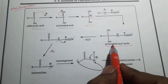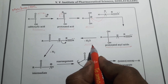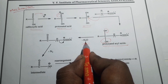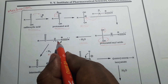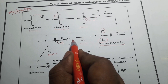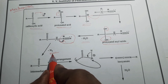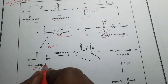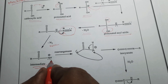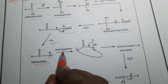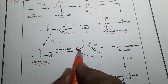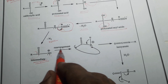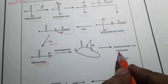Further, this protonated acyl azide loses water — the OH and hydrogen are removed — followed by loss of nitrogen. This leads to produce an intermediate with a positive charge on the nitrogen, which is the nitronium ion intermediate. This intermediate then undergoes rearrangement: the carbonyl carbon's R group migrates onto the nitrogen, and it gives isocyanate.